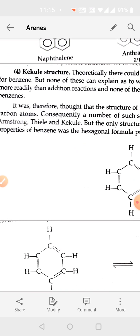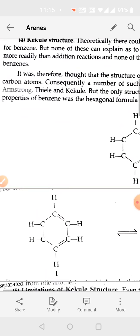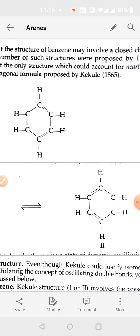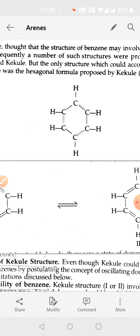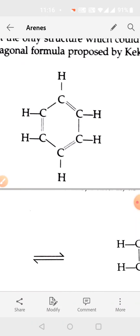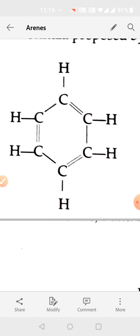Then comes the structure of benzene. Many scientists tried to assign different structures to the compound having formula C6H6. The Kekulé structure is assumed to be closer to the actual structure of benzene than other proposed structures. Kekulé proposed a structure with three double bonds alternating with single bonds.